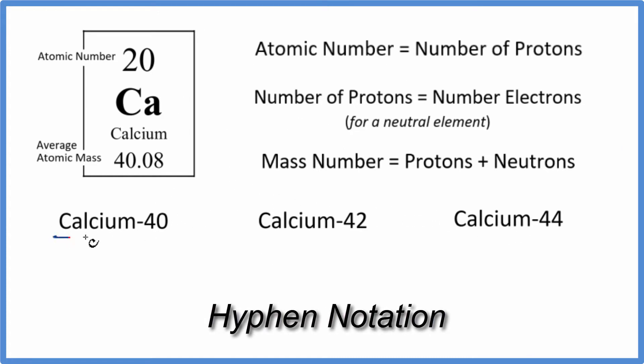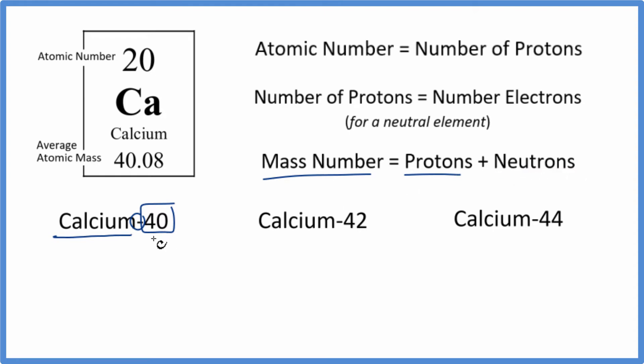That's where we have the element symbol, a hyphen, and then what we call the mass number. The mass number, that's the number of protons and neutrons. So we know the mass number for each of these isotopes of calcium.